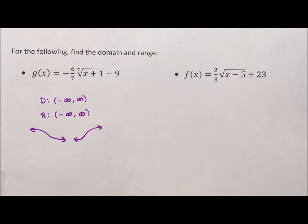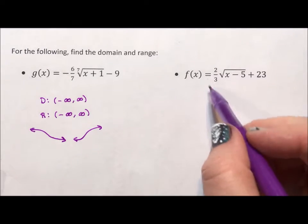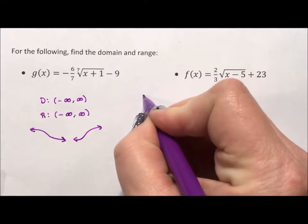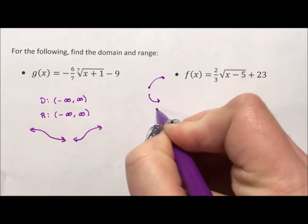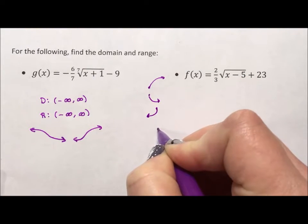There is no beginning or ending point, versus an even root which has a look that could look like this, or like this, or like this, or like this.